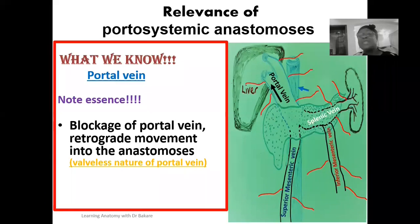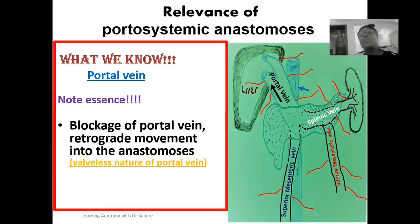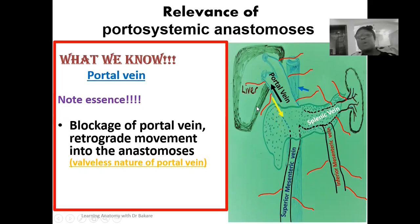The valveless nature of the portal vein and its tributaries further contributes to blood movement in a backward direction. The portal vein is not a true vein because it is valveless. Veins are generally said to contain valves, but the portal vein and its tributaries are valveless. This valveless nature further enhances easy movement of blood in backward direction when there is blockage. If there were valves within the portal vein and its tributaries, they would impede the backflow of blood. So the blood will look for other means through which it will be drained out of the portal venous system.